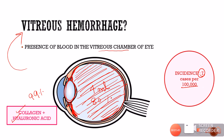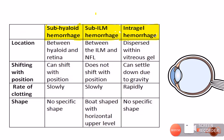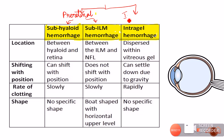Vitreous hemorrhage is not very uncommon — about seven cases per one lakh population. Anatomically, vitreous hemorrhage can be located in two main positions: pre-retinal vitreous hemorrhage or intra-vitreous hemorrhage. Pre-retinal vitreous hemorrhage is of two types: subhyloid hemorrhage and sub-ILM hemorrhage. Intra-vitreous hemorrhage is mostly the dispersed variety, also called intragel hemorrhage.